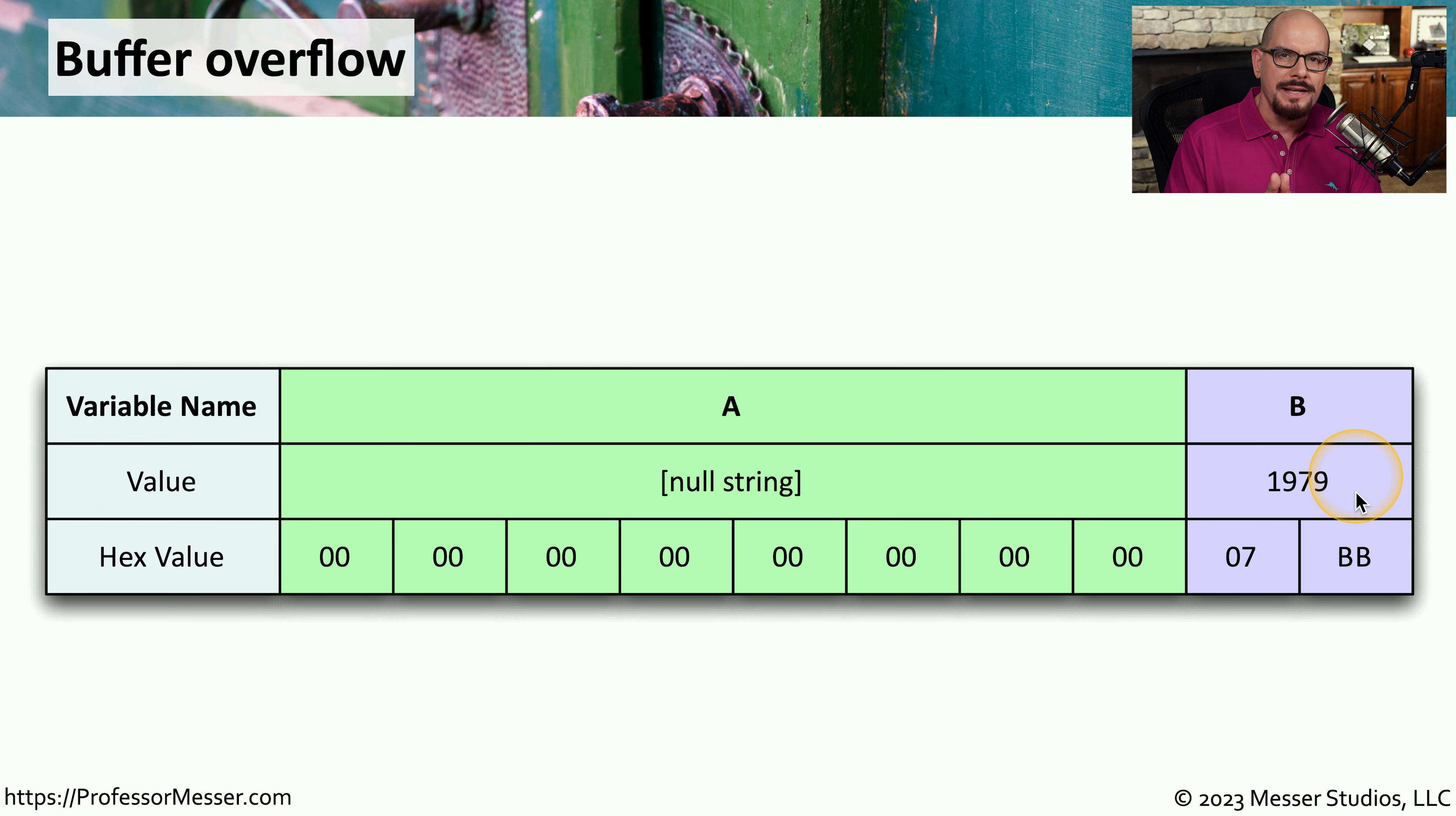But the attacker would like to have administrative rights. But for administrative rights, the value of variable B must be anything over 24,000.